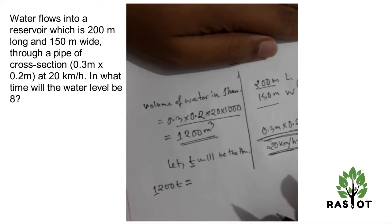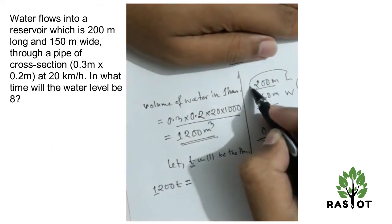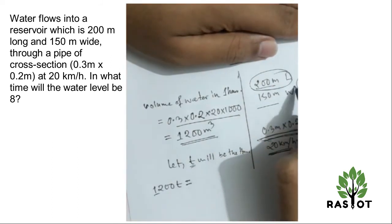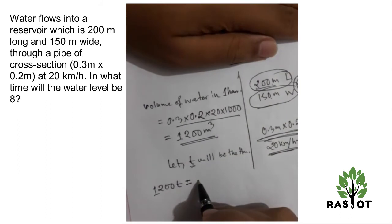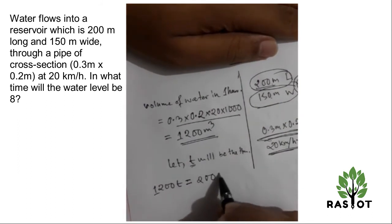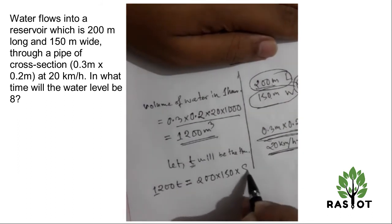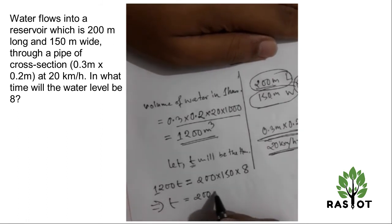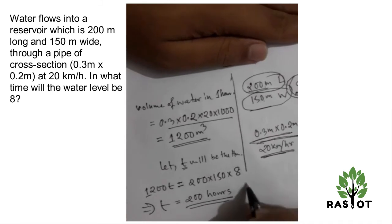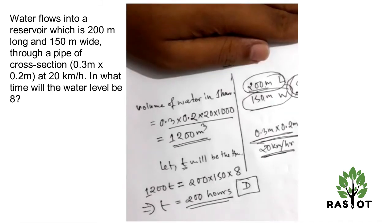So we equate: our length is 200, width is 150, and height is 8. Length into width into height gives us the volume. So 200 into 150 into 8 will give us T equals 200 hours. So this is the answer, that's why option D is the correct answer.